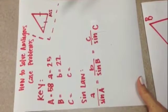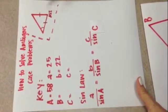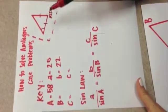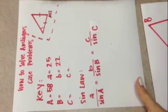In order to use the Sine Law to solve the ambiguous case problem, you must be given an angle and its opposite side.